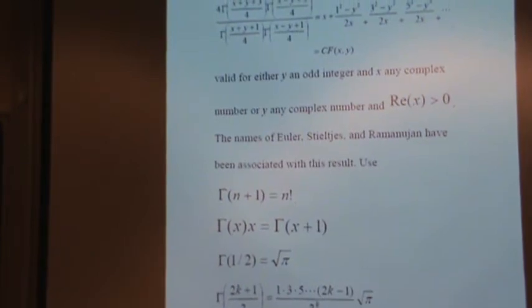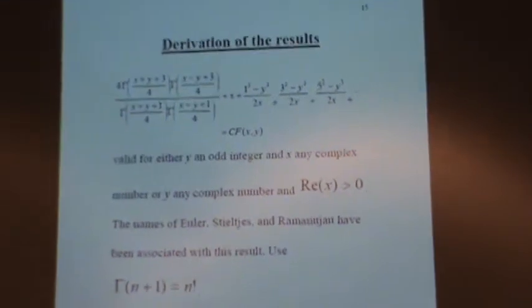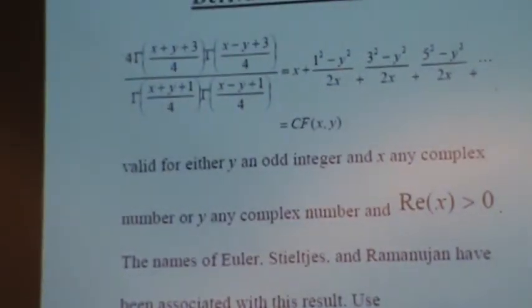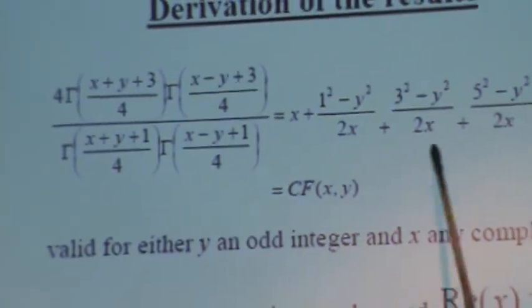How are these results derived? They come from this formula, which has 4 gamma functions here, and the continued fraction here, and generalized a bit.